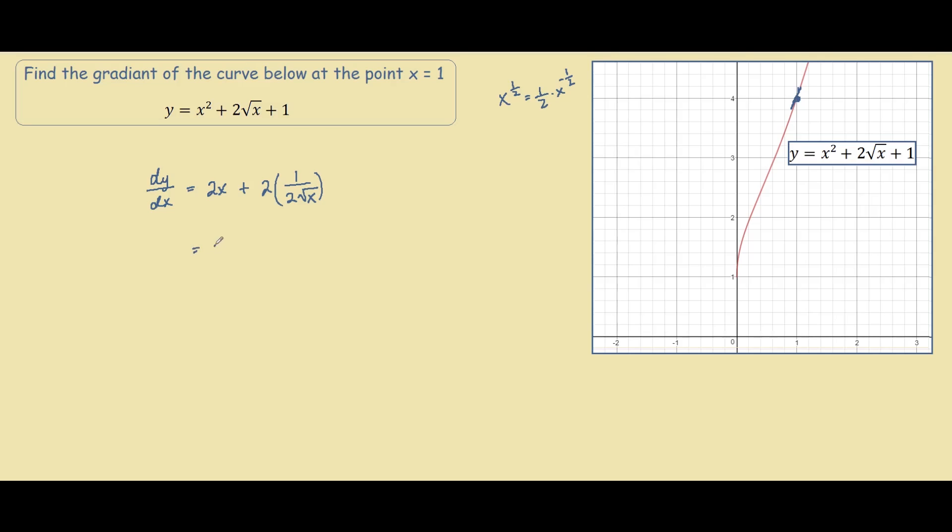Simplifying this, we have 2x + 1/√x because the 2s cancel out. At x equals 1, we substitute 1 into our dy/dx.